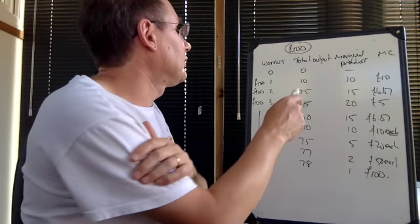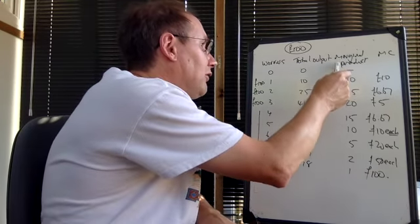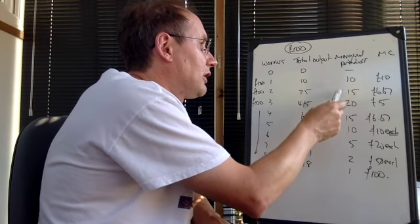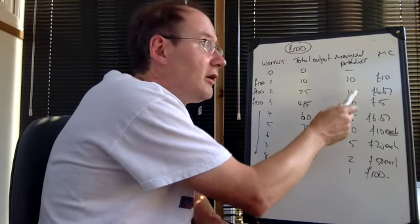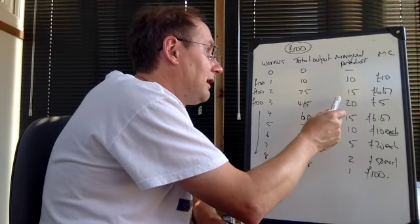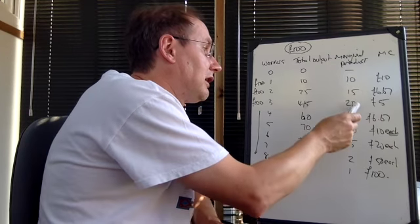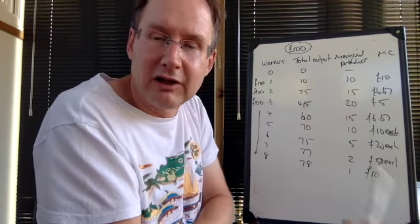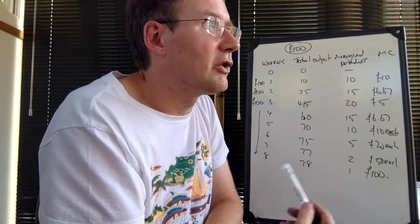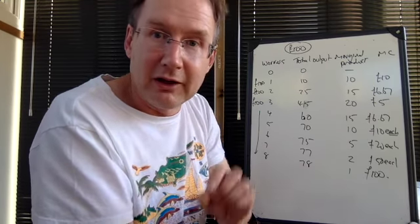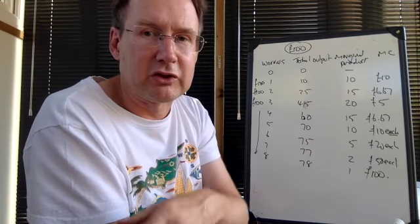So we can see, therefore, that here we have increasing returns to the variable factor, because each worker's adding less than the one before, but marginal cost is falling. Here, we have diminishing returns to the variable factor, and as a result, because each worker is less productive than the one before, the cost of each extra unit is actually going up. And that's the link between marginal product and marginal cost.